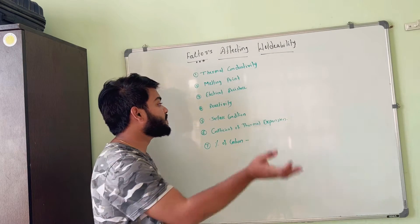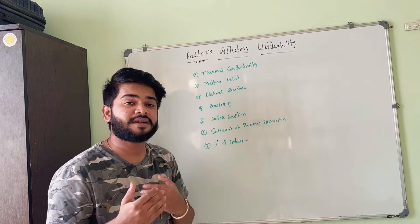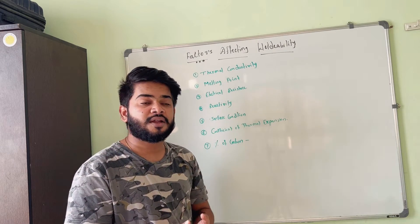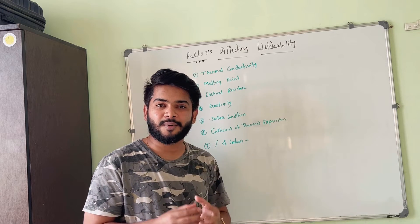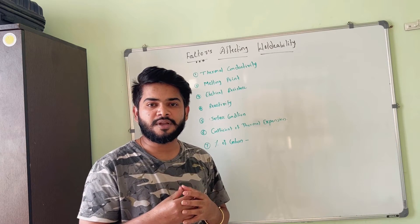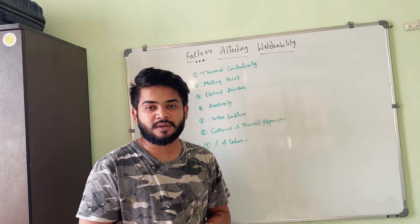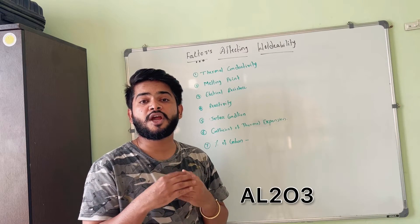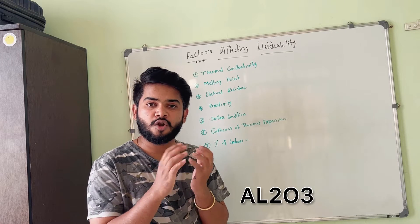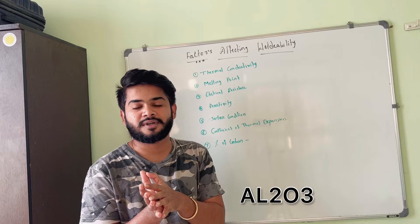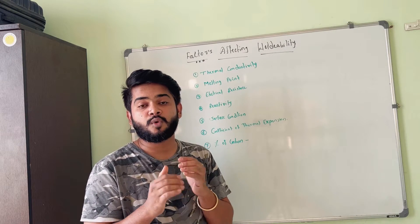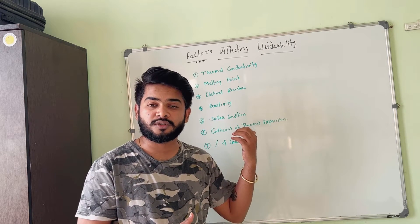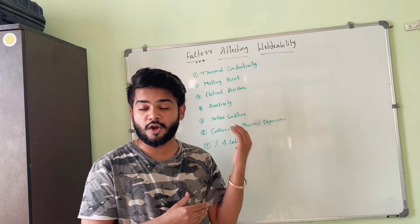The next factor affecting weldability is reactivity. If a metal's reactivity with water, air, and surroundings is very high, it is difficult to weld. For example, aluminum is a very reactive material. When exposed to the atmosphere it creates a layer of Al₂O₃ (aluminum oxide). It is a ceramic material and requires more heat to melt, because the melting point of Al₂O₃ is three times higher than that of aluminum, making it difficult to weld.